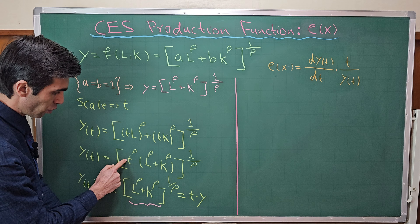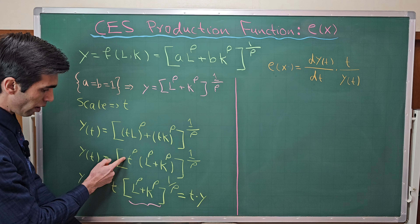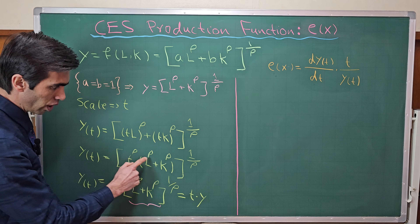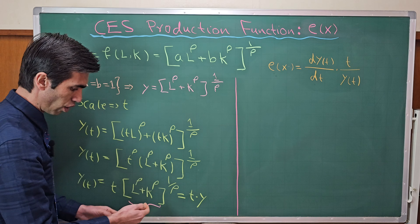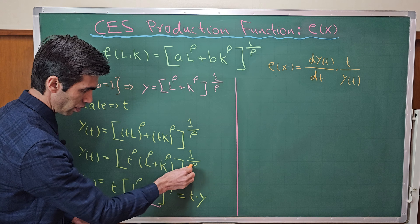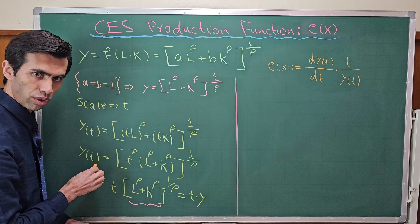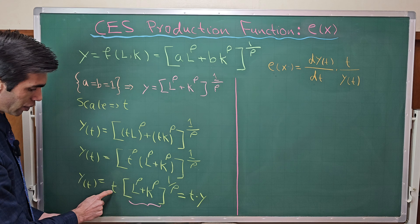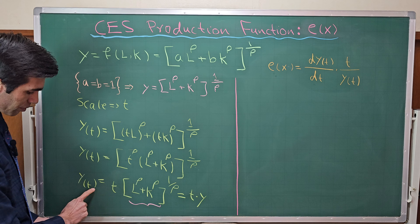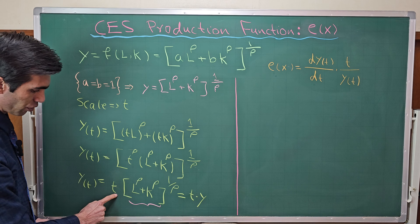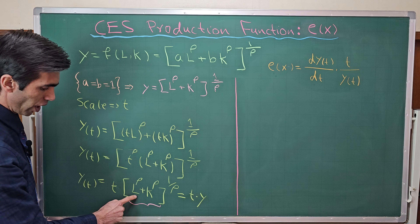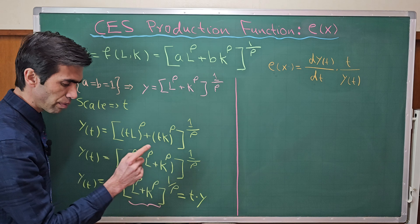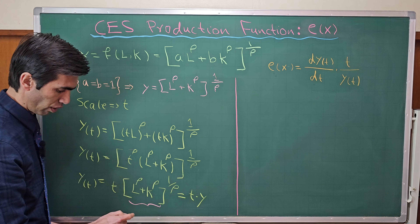We can move out this t to the power of rho. We have rho and 1 over rho — this rho will cancel out with this rho when we simplify. So t will come out, and y(t) will be equal to t multiplied by (l to the power of rho plus k to the power of rho), whole to the power of 1 over rho.